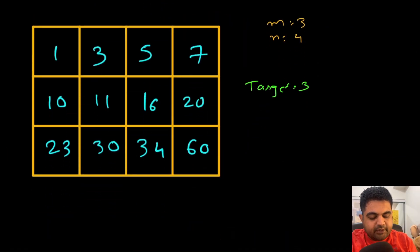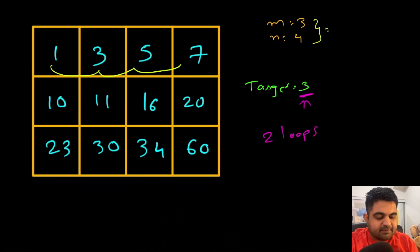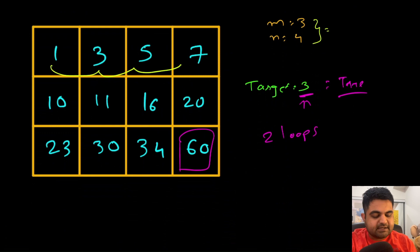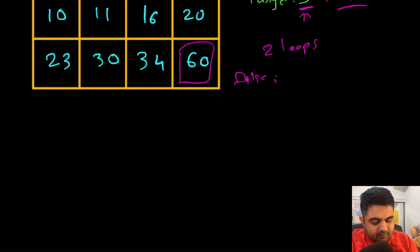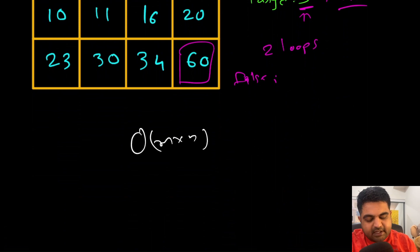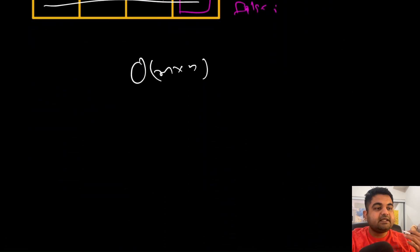For the brute force solution, since this is an m × n matrix, all we do is iterate over the matrix one by one using two loops and check if the target value is present. If found, return true immediately. If we reach the end without finding it, return false. This works but the time complexity is O(m × n) because we iterate over all elements, so we need to speed things up.